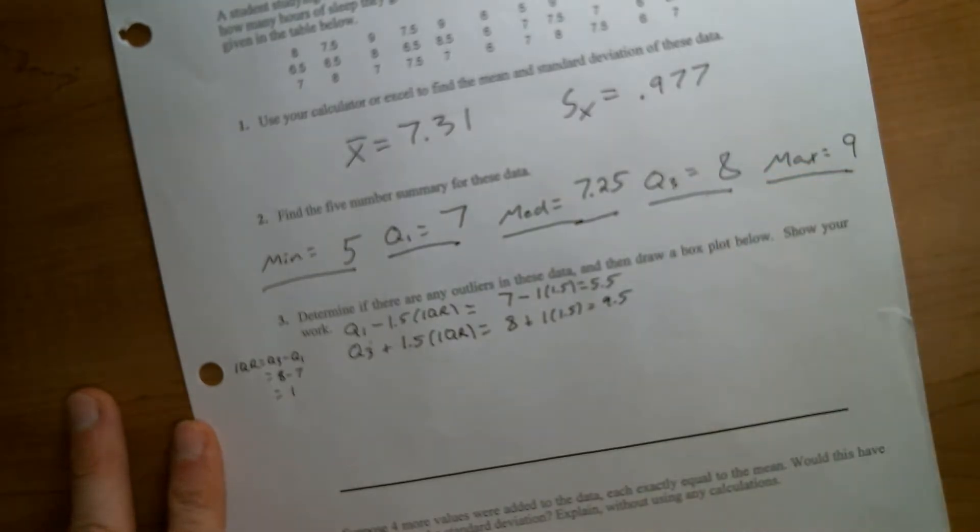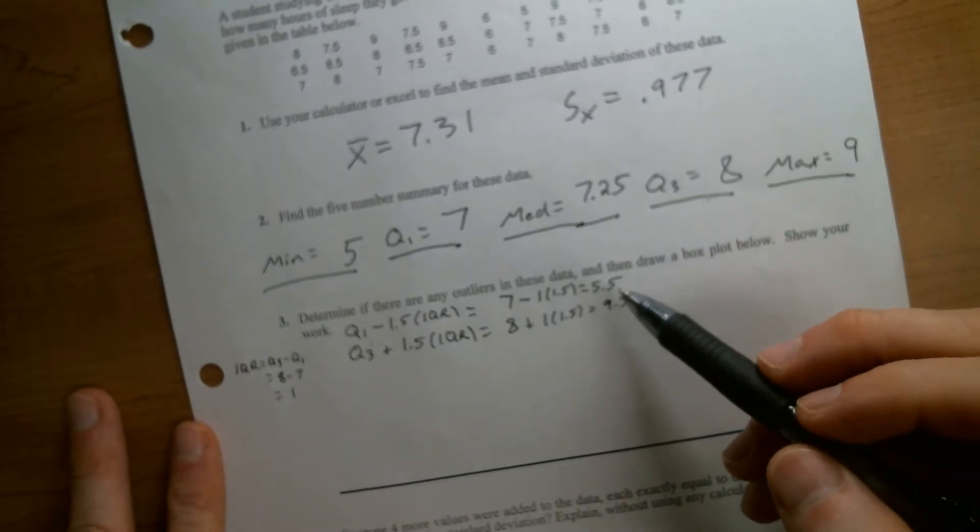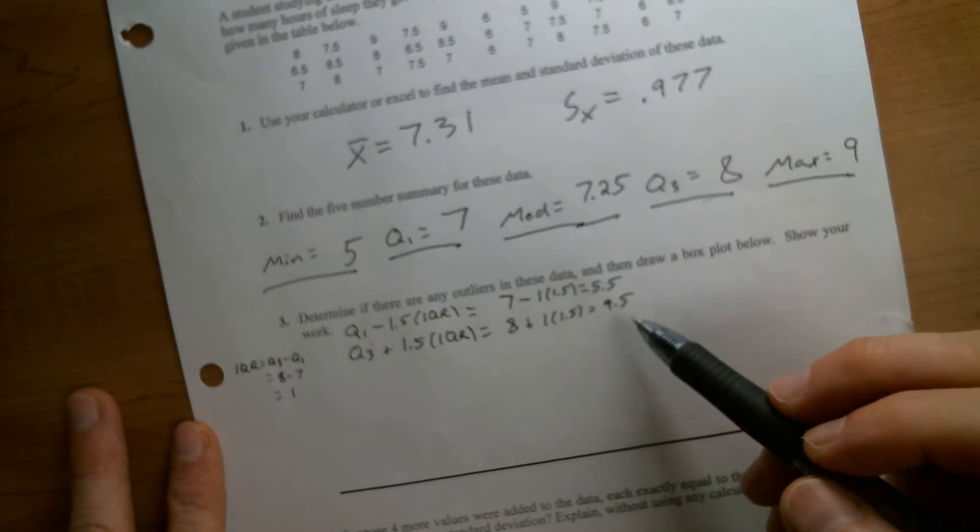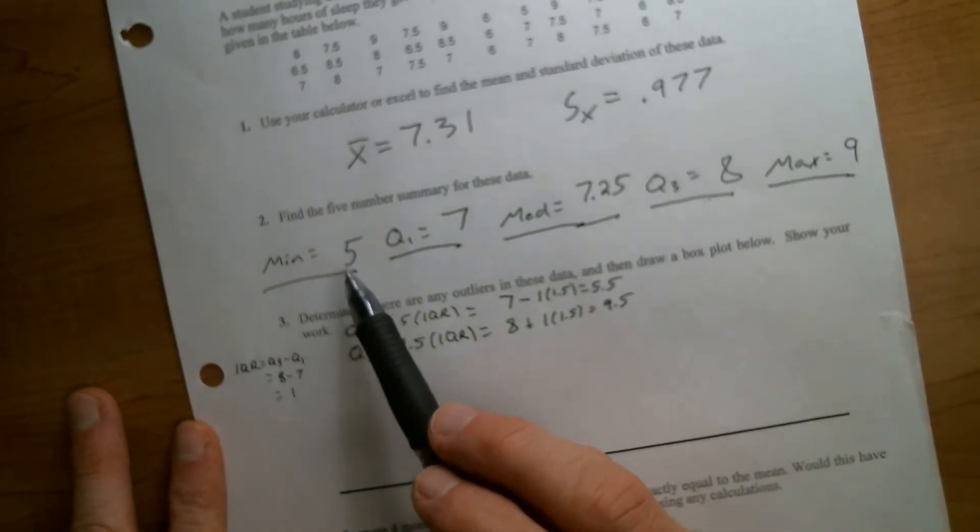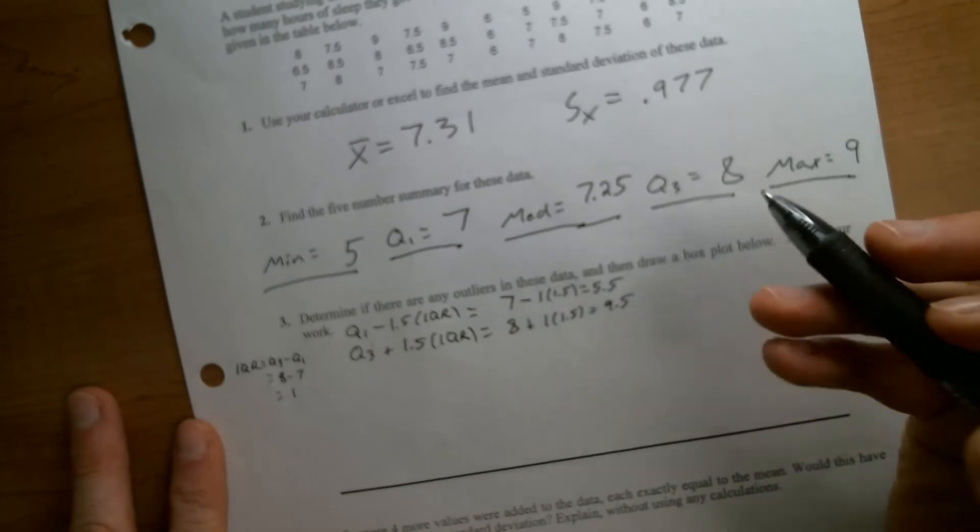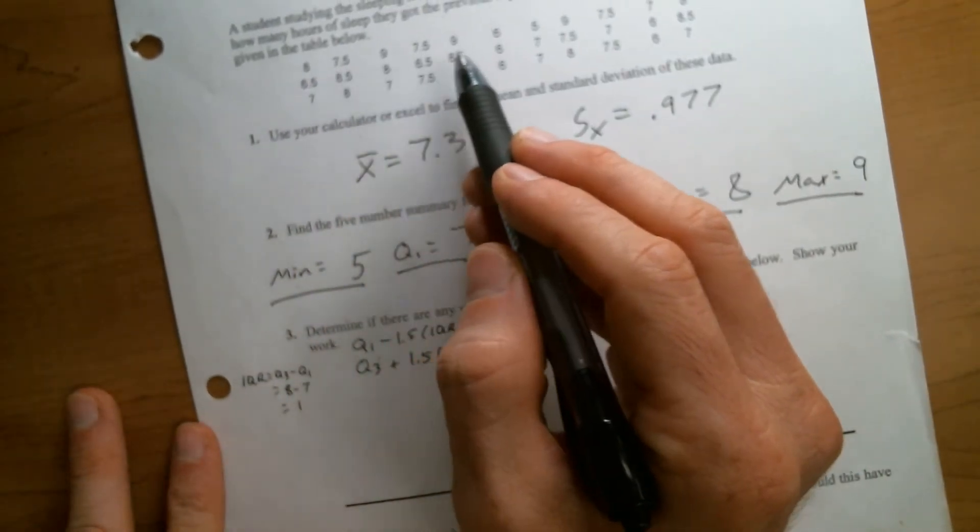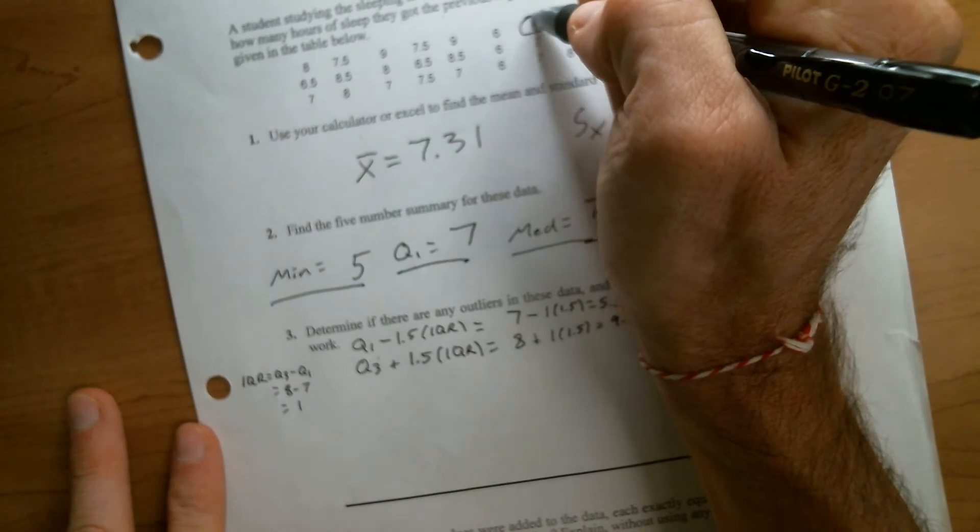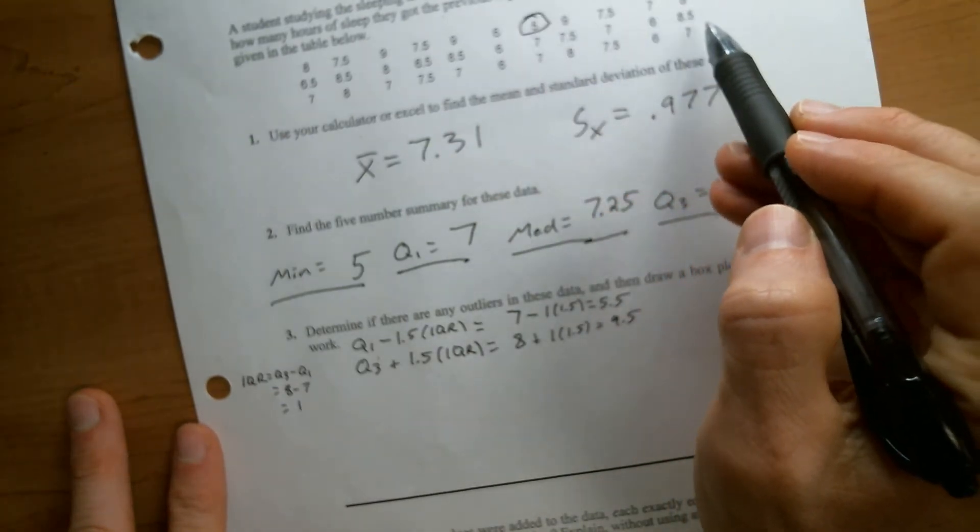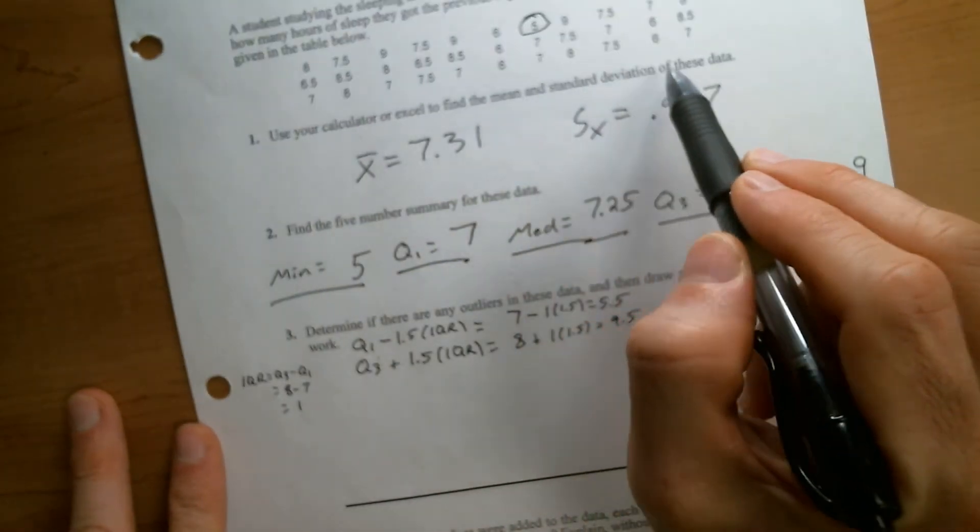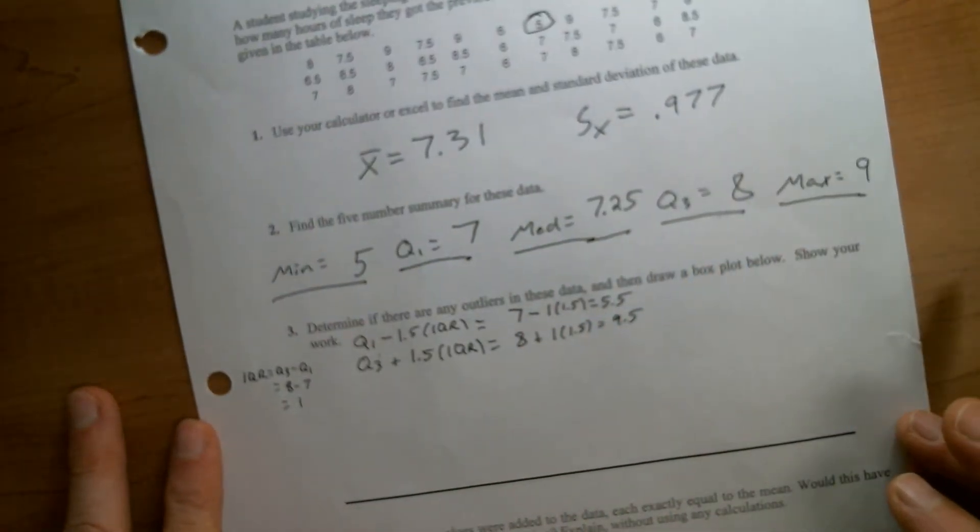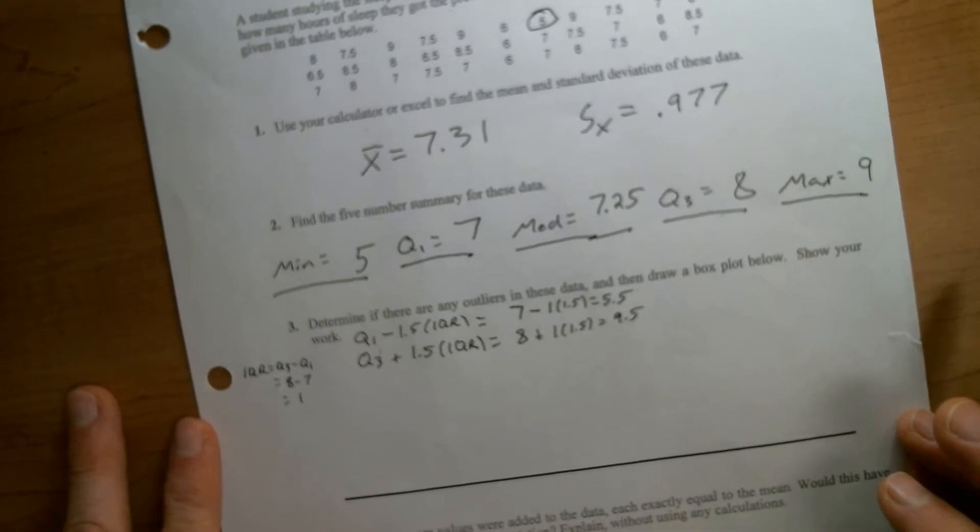So if we go and look back at our data, we have to see if we have anything below 5.5 and anything above 9.5. Well, we already know our max is 9, so we don't have anything above 9.5, but we can see our min here is 5, so we're going to have at least one outlier. There's the 5. They are not, so 5 is our lowest observation.